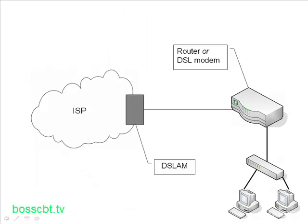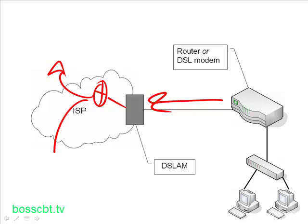When you connect to the POTS line and start sending traffic to your ISP, the DSLAM connects to the ISP's infrastructure — their routers — which then route your traffic to the Internet or wherever you're going.